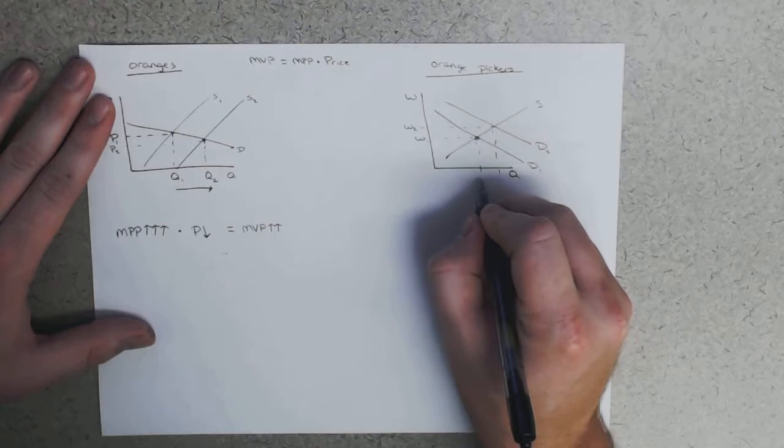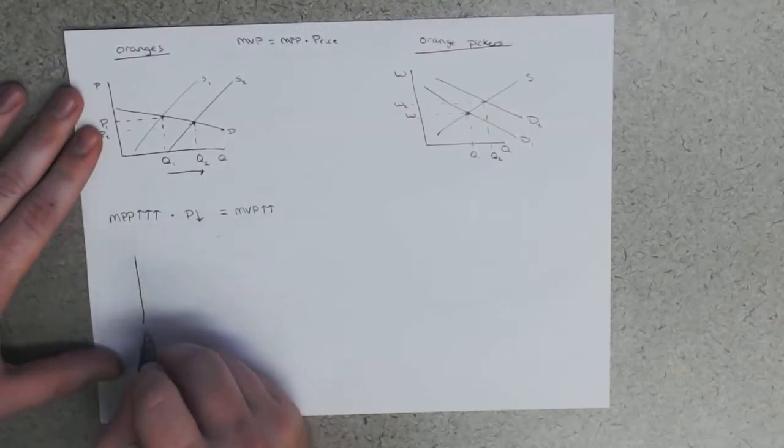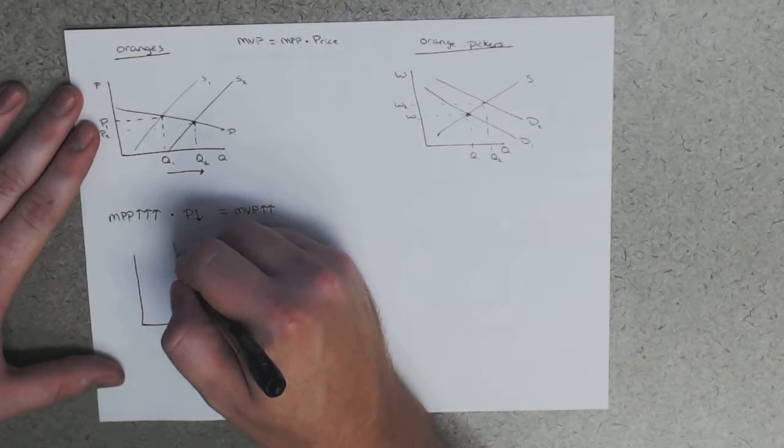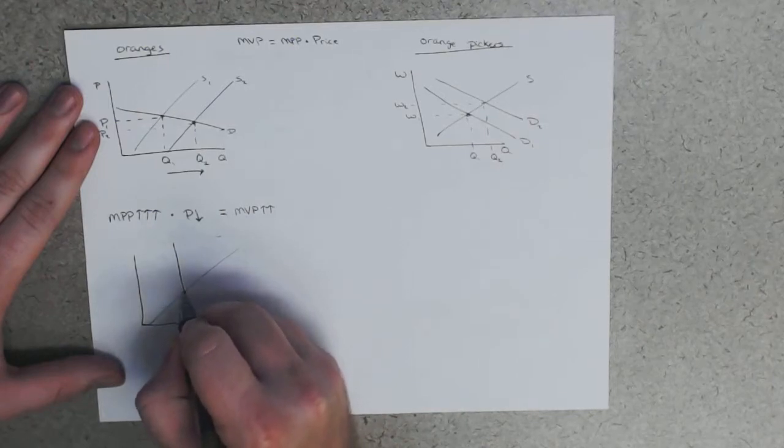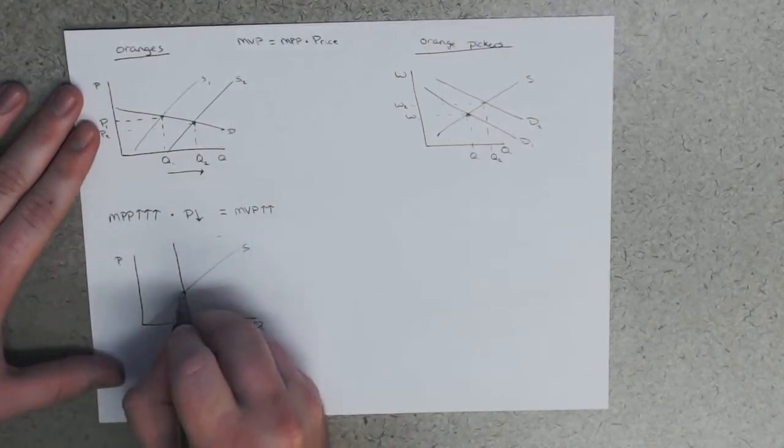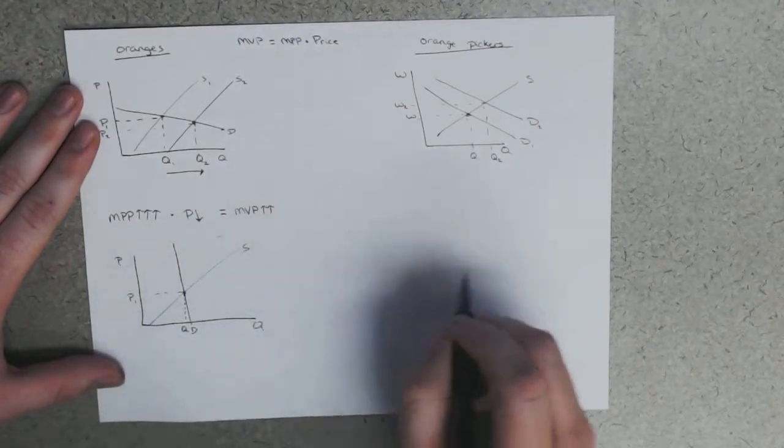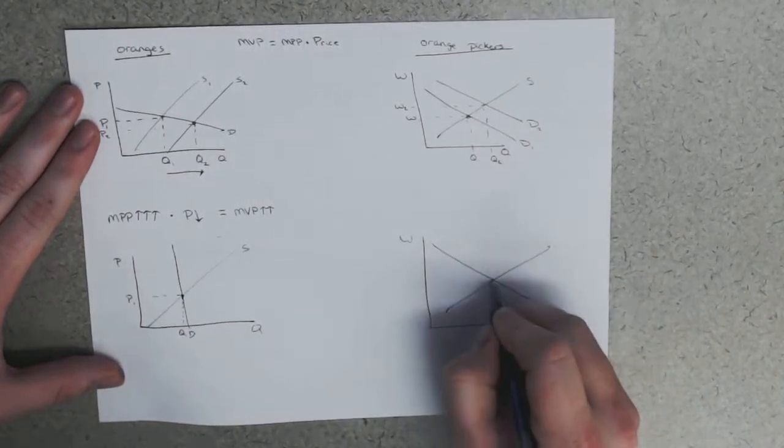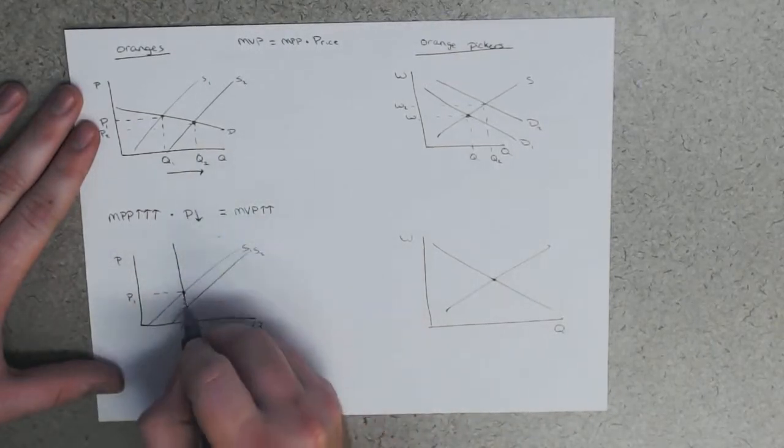The farm is making more money per worker than they used to. What about a case where demand for oranges is very inelastic? So let's just draw a really inelastic curve.